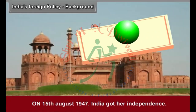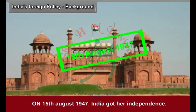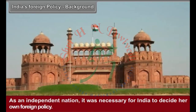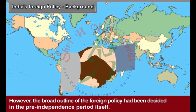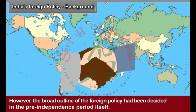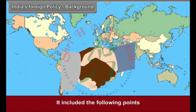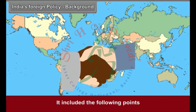On 15th August 1947, India got her independence. As an independent nation, it was necessary for India to decide her own foreign policy. However, the broad outline of the foreign policy had been decided in the pre-independence period itself. It included the following points.